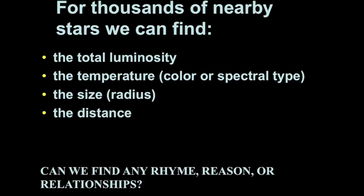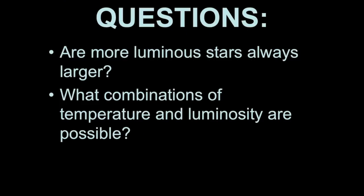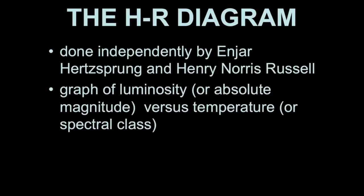If we look at all the nearby stars we can, we can determine things like their luminosity, their temperature, their size, and their distances. And what are the relationships between these things? We can ask questions, such as, are more luminous stars always larger? And what combination of temperature and luminosity are possible?